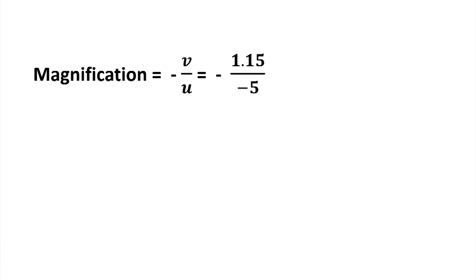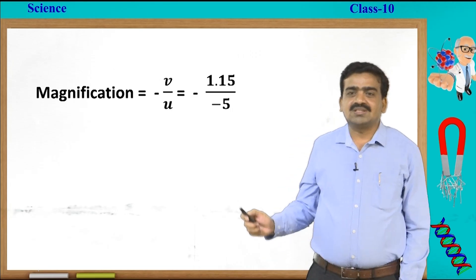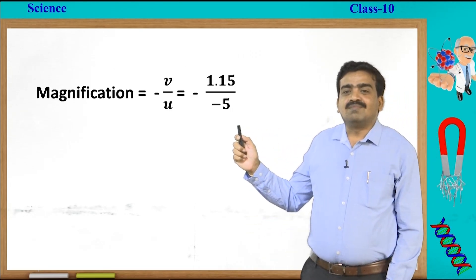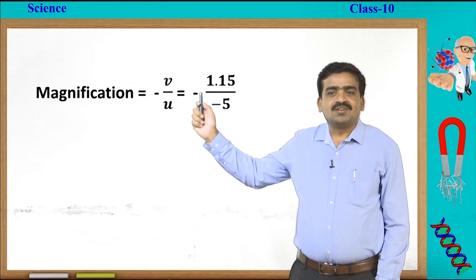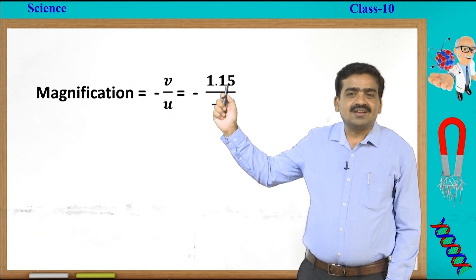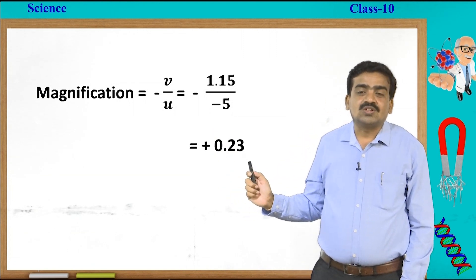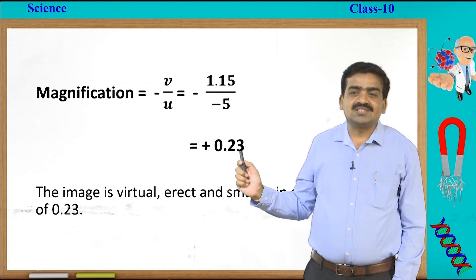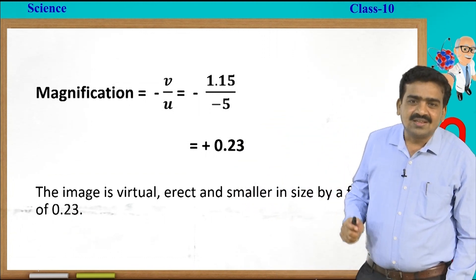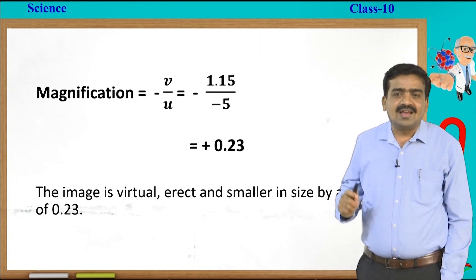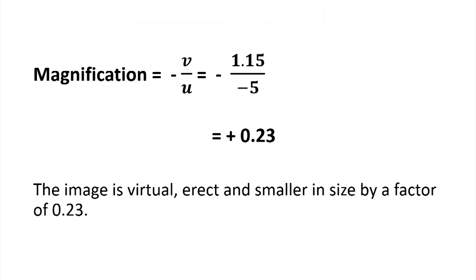Now we calculate the magnification using the formula m = −v/u. Substituting: −1.15 divided by −5 gives +0.23. So the magnification factor is +0.23, which means the image is virtual, erect and smaller in size by a factor of 0.23.